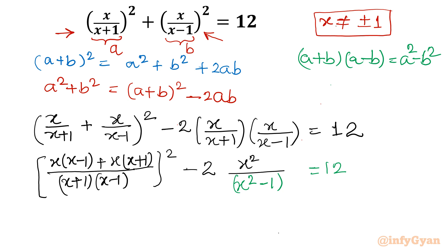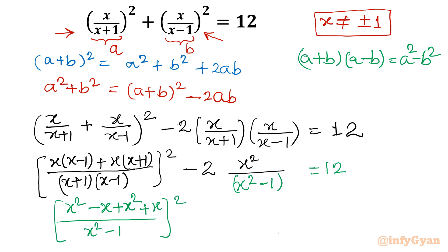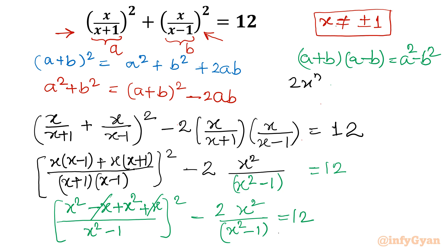Expanding the numerator: x²−x + x²+x = 2x², so the bracket simplifies to 2x²/(x²−1). The equation becomes [2x²/(x²−1)]² − 2x²/(x²−1) = 12.